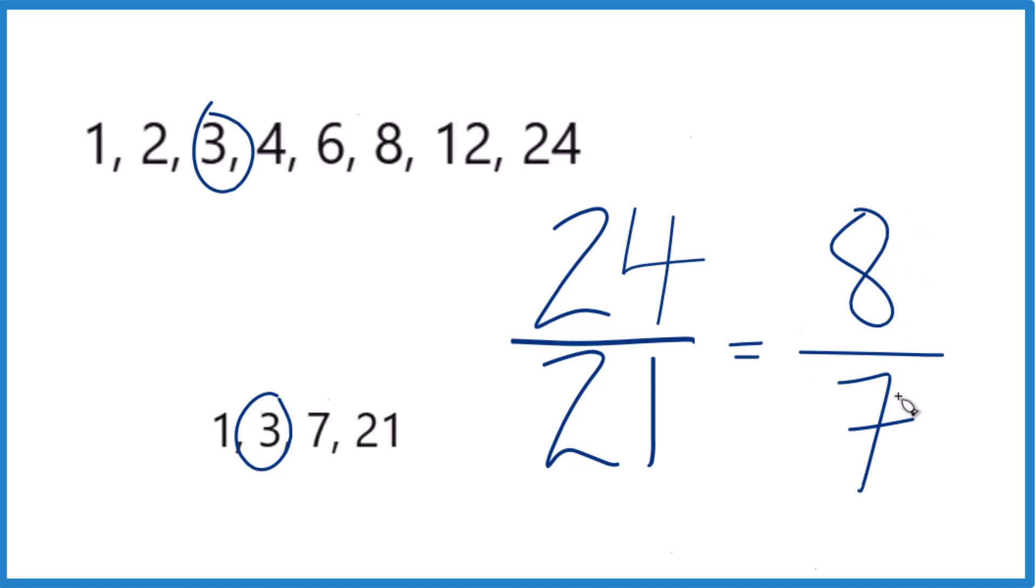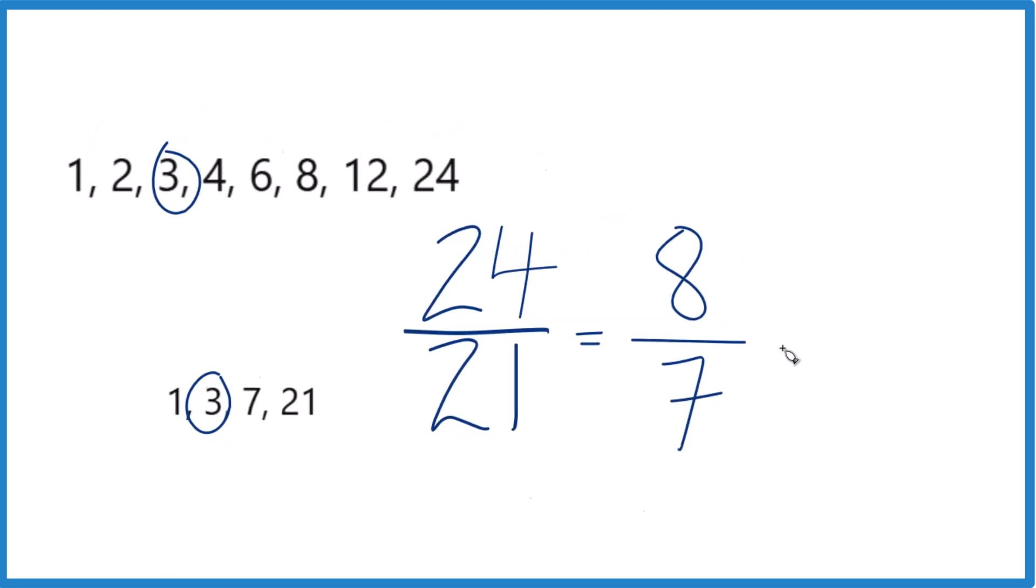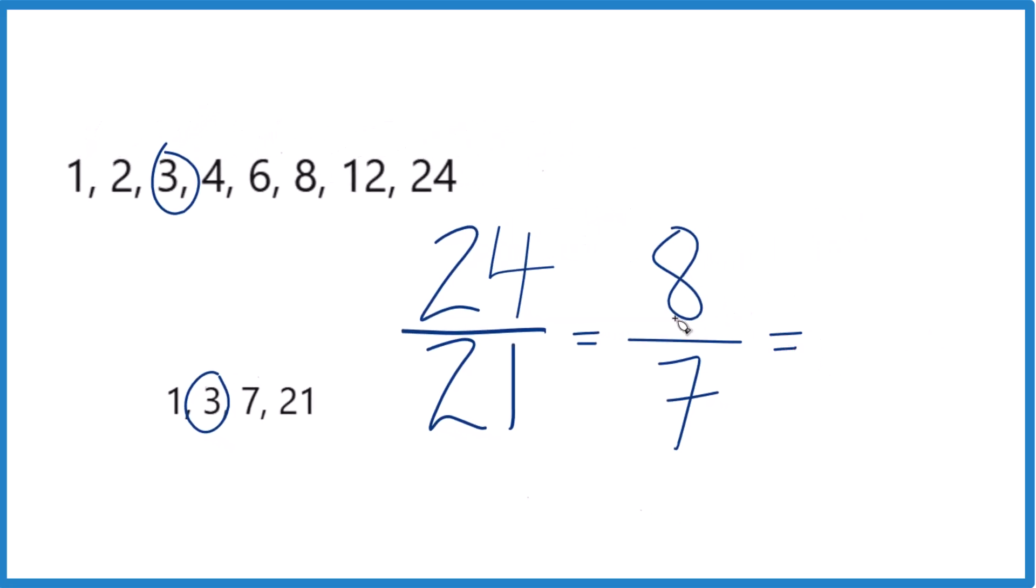This is an improper fraction because the numerator here is larger than the denominator. So let's convert this to a mixed number. So 7 goes into 8 one time with 1 left over, and we'll keep the 7 the same.